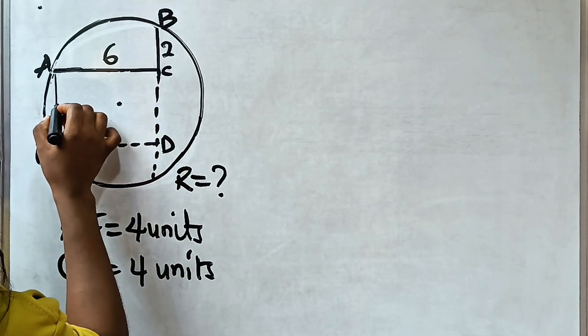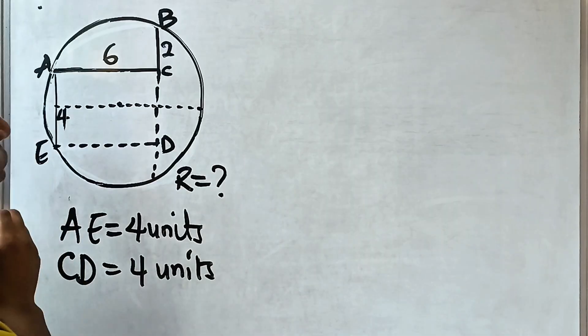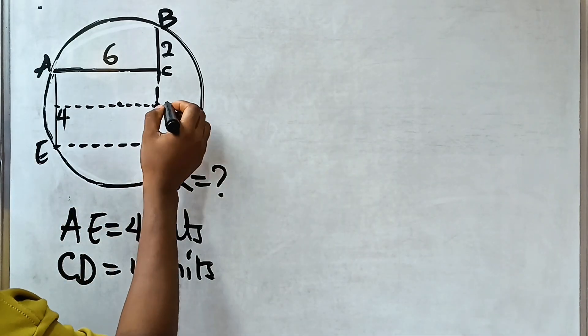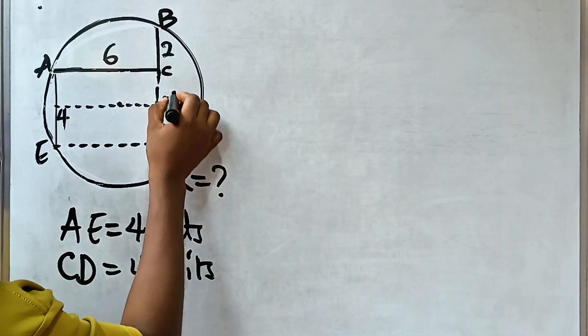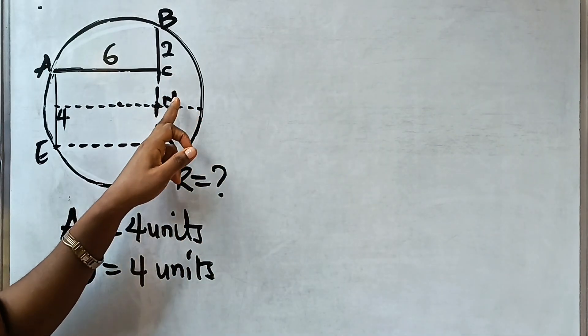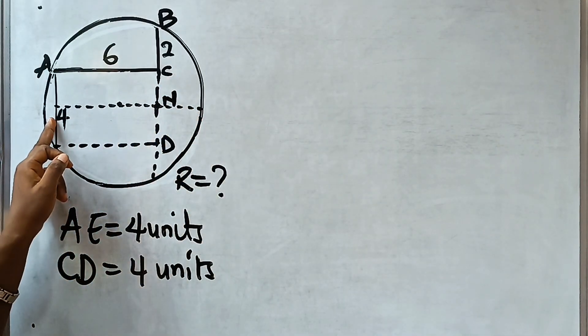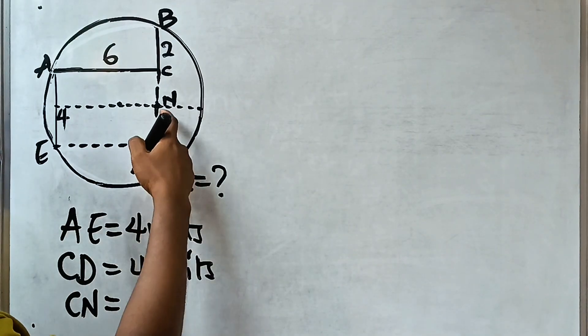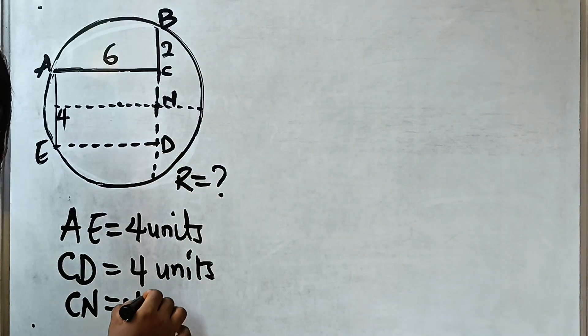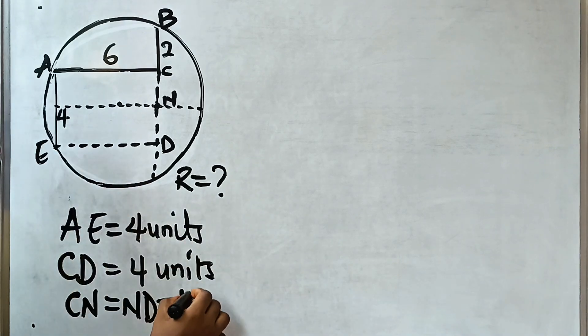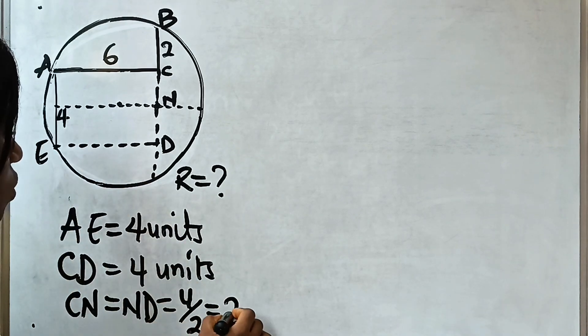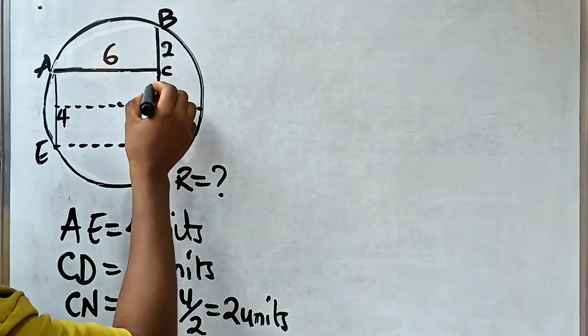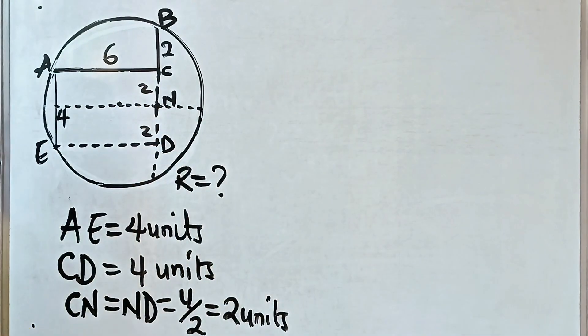If we should drop a straight line from the center across and call this point N, it means that CN is equal to half of 4. So CN should be equal to ND, which is equal to 4 divided by 2, which is equal to 2 units. So it means that here is 2, and here is 2 as well.